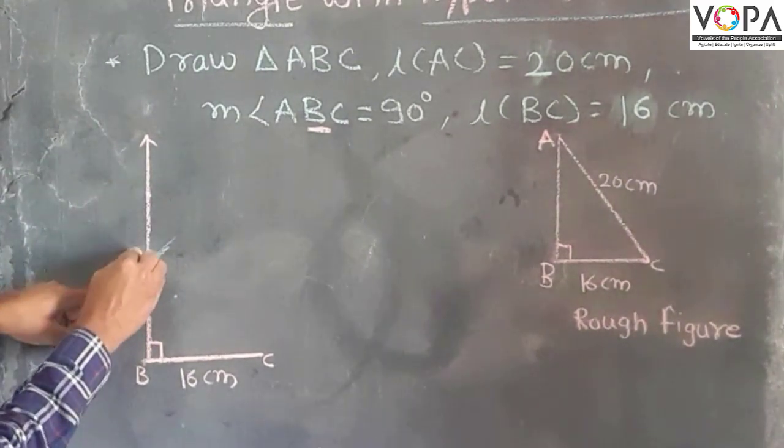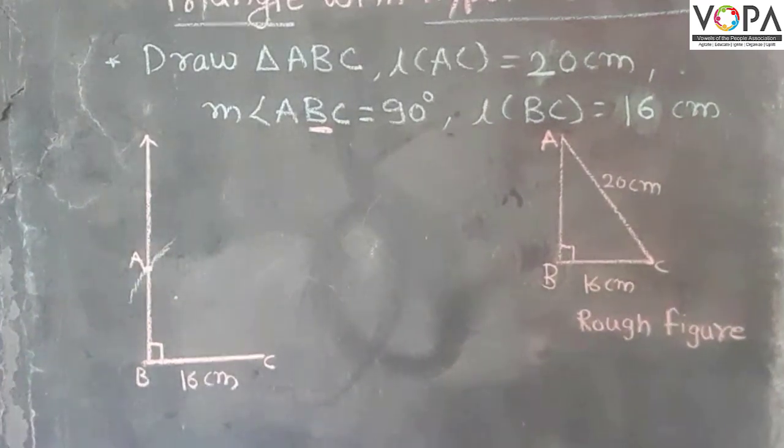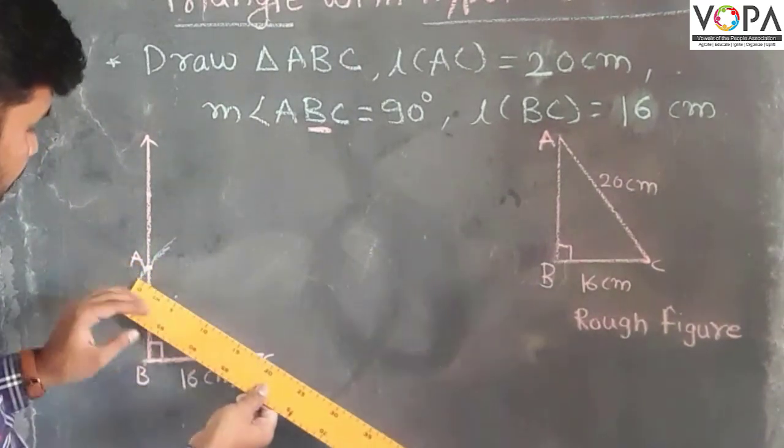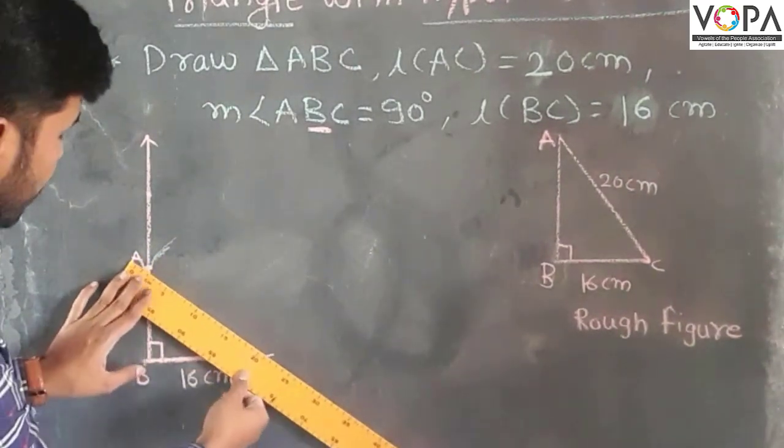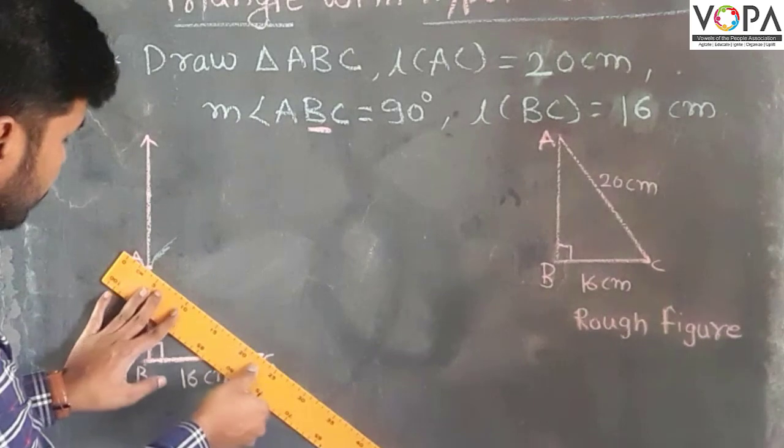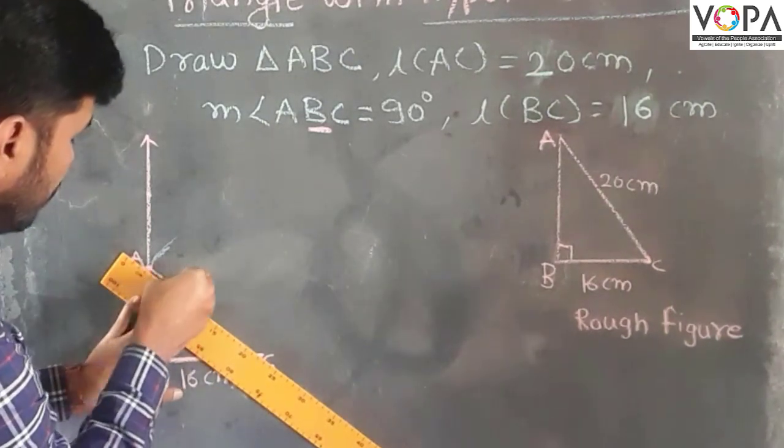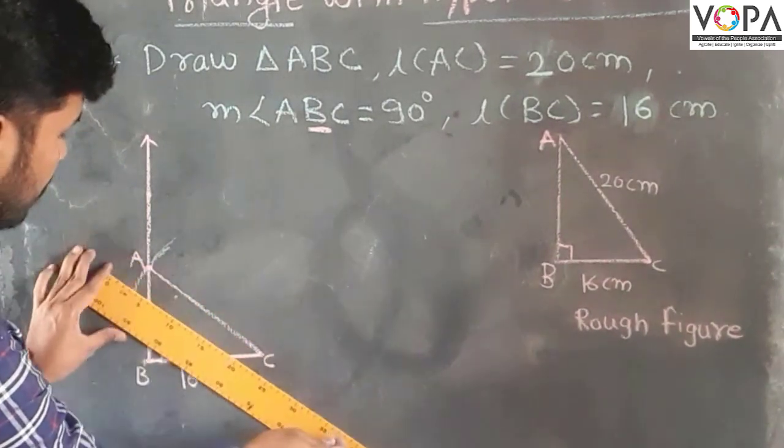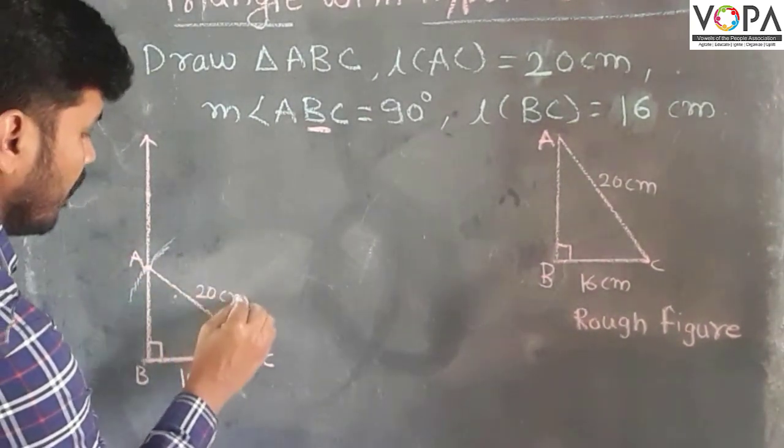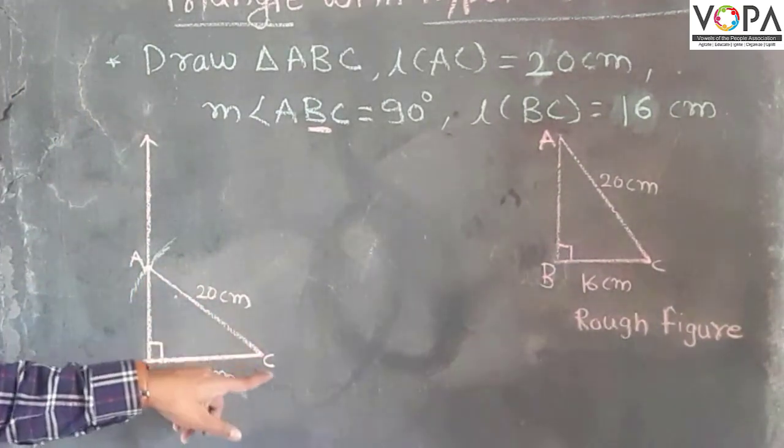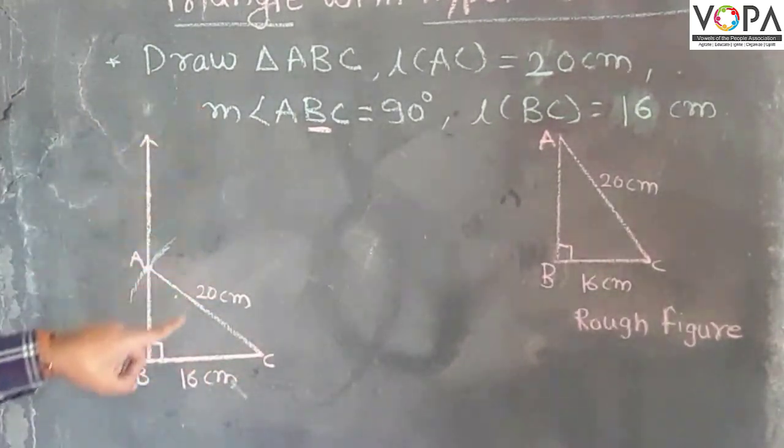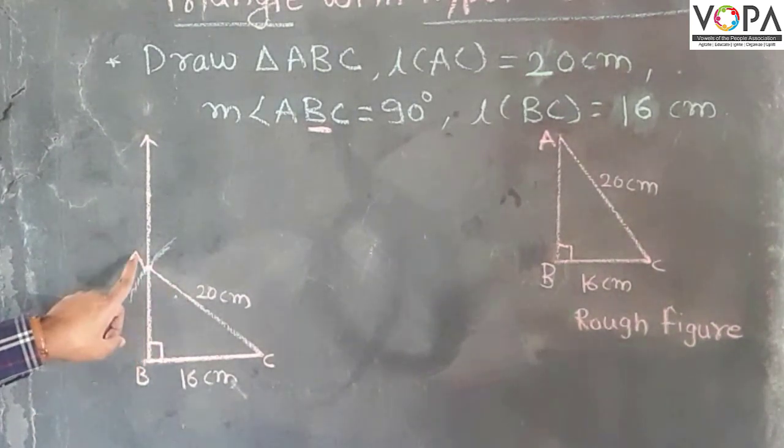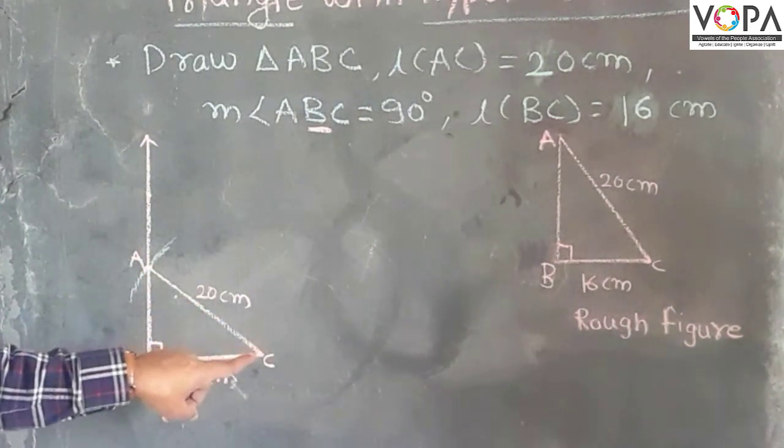The intersection point, that is A, and join that point A and C. You can see that it is 20 centimeters long. So here AC is 20 cm long, and this AC is hypotenuse of this triangle. In front of the right angle, this side is hypotenuse of the triangle.